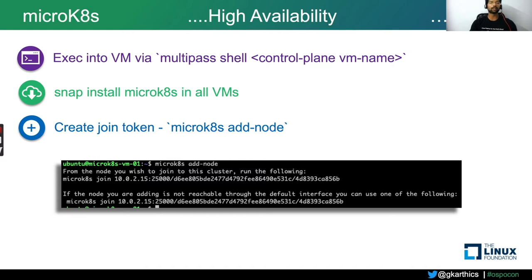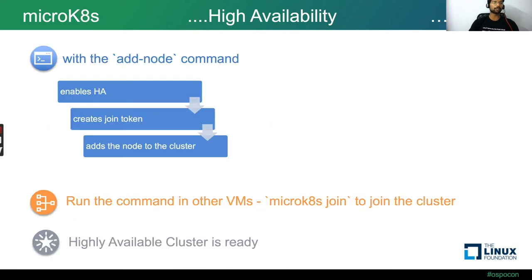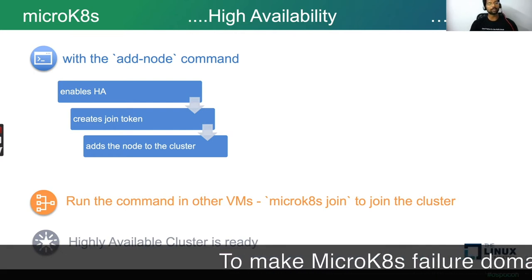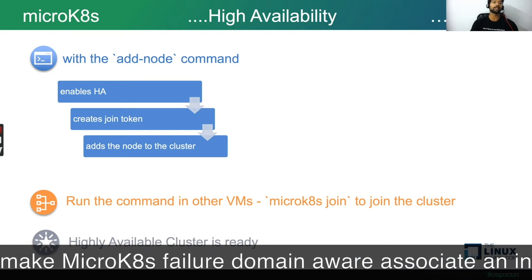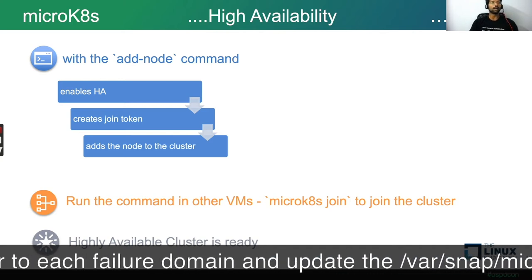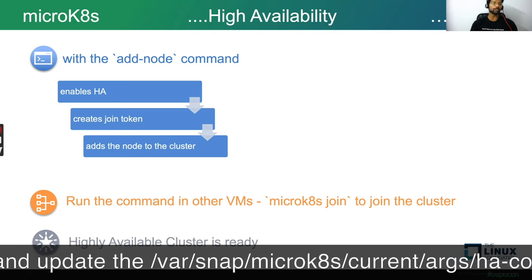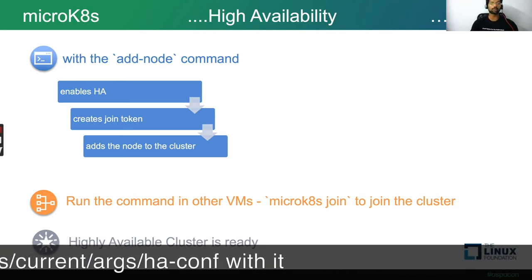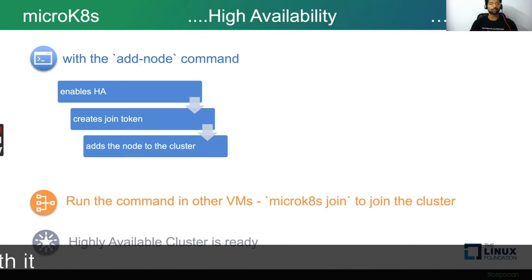Once MicroK8s is installed, the next thing is to create the token for joining the cluster. MicroK8s has a subcommand called add-node. The output of add-node is a command — MicroK8s join with the IP address, port number, and a token. When you execute MicroK8s add-node, the machine you execute it on is designated as the control plane and high availability is enabled. It creates a join token automatically, and using that token on another machine adds it as a worker node into the cluster. That's how you create a highly available MicroK8s cluster.